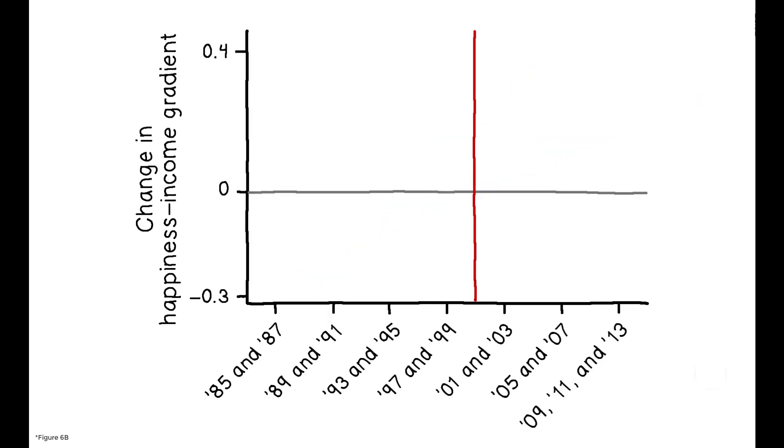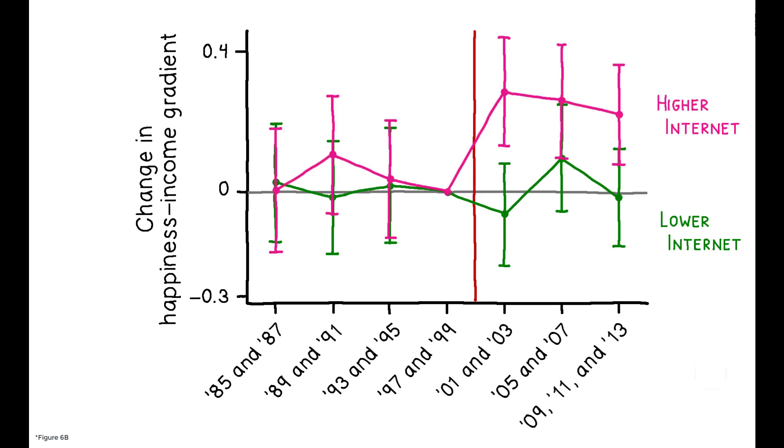To address this, the author shows that the post-2001 change in the gradient was entirely concentrated among individuals with higher internet access, who, presumably, would have been more likely to use the online tax lists.